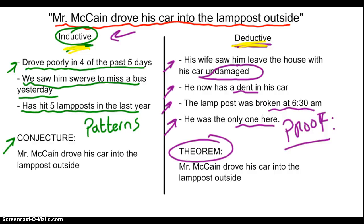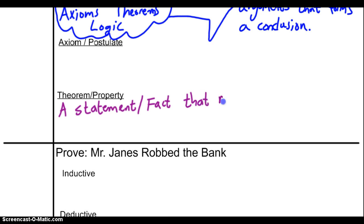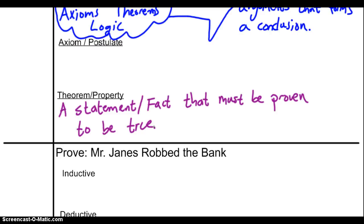I just used the word theorem, so let's talk about what that is. A theorem is a statement that we are going to prove to be true. For example, Mr. McCain's car hitting the lamppost is a theorem because it's not a given fact — we have to prove it ourselves. A more mathematical example is vertical angles. We've said vertical angles are congruent, but actually we have to prove that. In later classes, we will show why vertical angles are congruent.